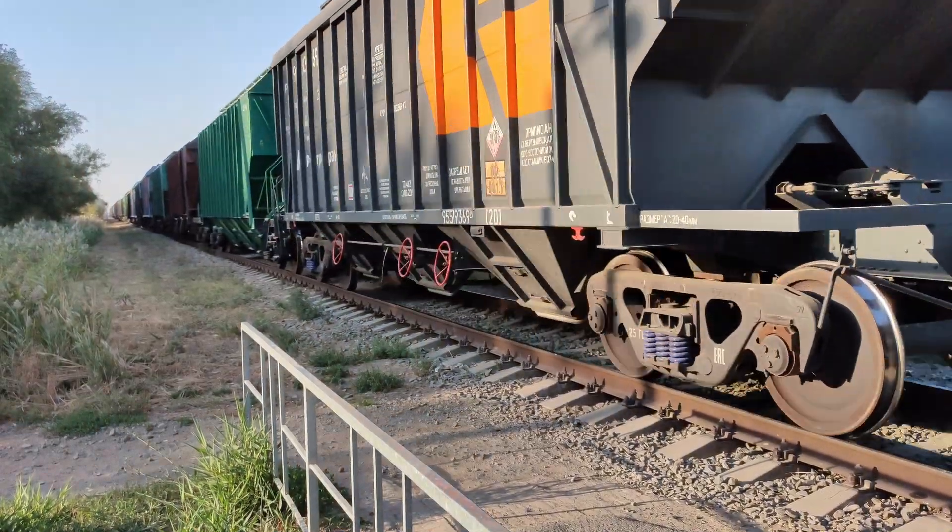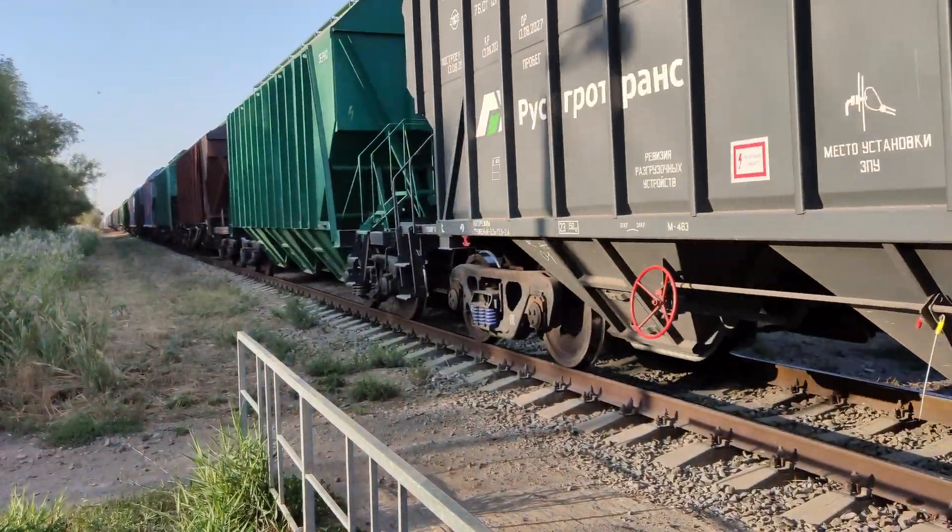Sudden changes in track geometry introduce a risk of derailment. This is for a number of reasons, but a common one is the loading and unloading of the suspension of the trains, particularly freight trains.